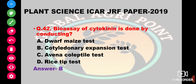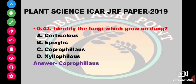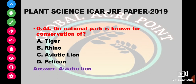Identify the fungi which grow on dung. The options are corticolous, epizoic, or coprophilous. The answer is coprophilous. Coprophilous fungi grow on dung; the rest grow mainly on wood or bark. Which national park is known for conservation of tigers, rhinos, Asiatic lions, or pelicans? The answer is Asiatic lions.